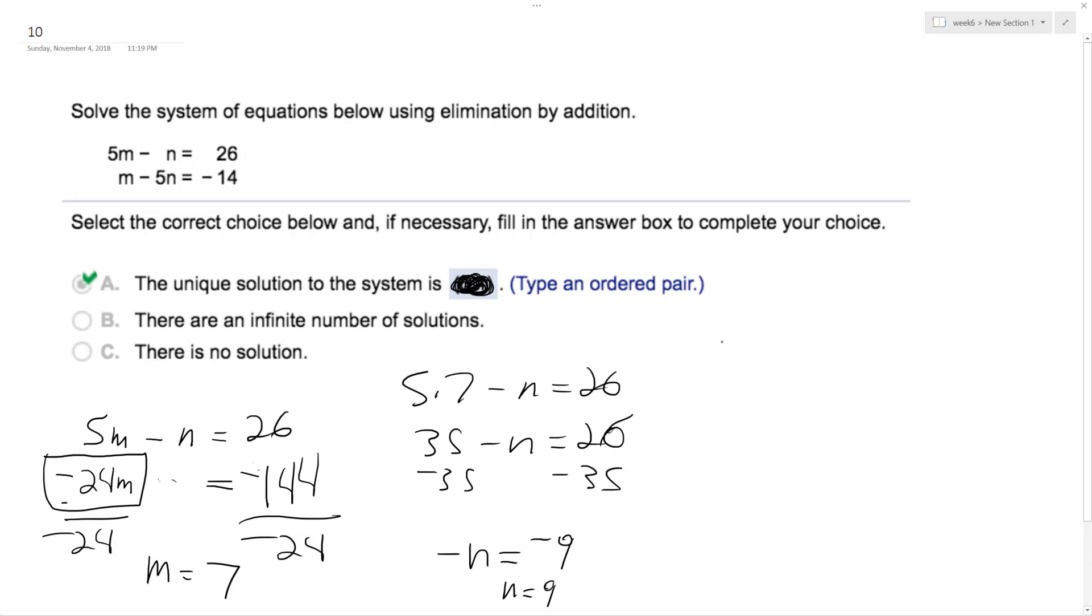So the solution is 7 comma 9, I believe. Wait, 6 comma 4... You know what? That does make sense because 144 divided by 24.